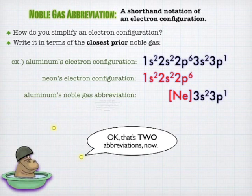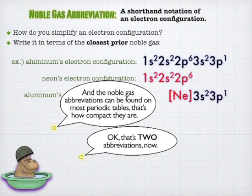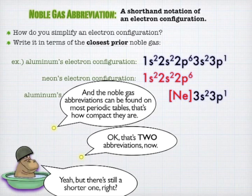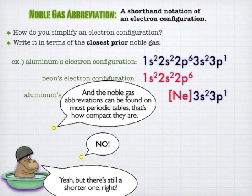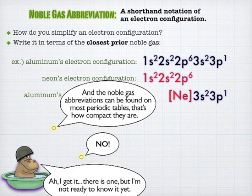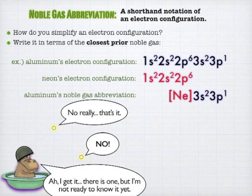Now, this doesn't cover every situation on the periodic table. There are some filling order exceptions in the D subshell — the transition metals — and that mainly deals with the fact that transition metals will happily pull electrons from the outermost shell to get a half-filled D subshell. You can certainly learn these exceptions if you want to. They're not absolutely critical to first-year chemistry success, but it's what really happens, so they're out there for you to learn.